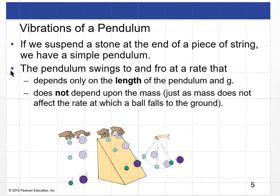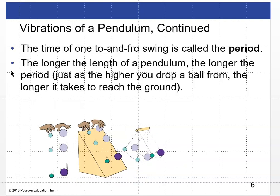If we suspend a stone at the end of a piece of string, we have a simple pendulum. The pendulum will swing to and fro at a rate that depends only on the length of the pendulum and G. It does not depend upon the mass, just as mass does not affect the rate at which a ball falls to the ground. The time of one to-and-fro swing is called the period. The longer the length of the pendulum, the longer the period — the slower it swings.